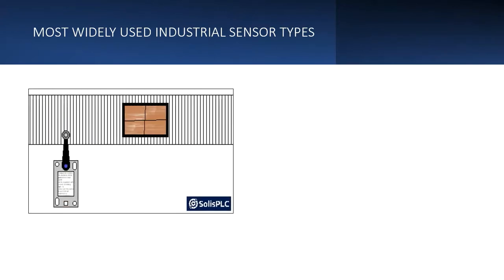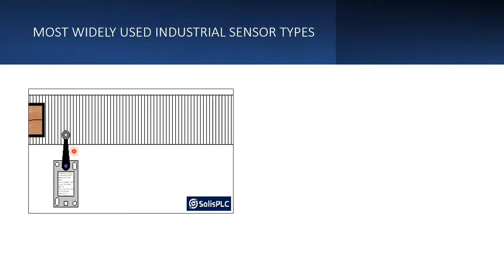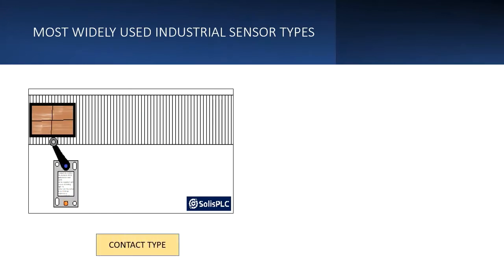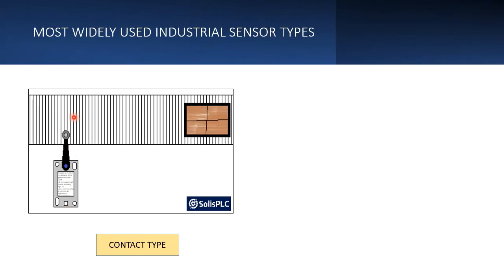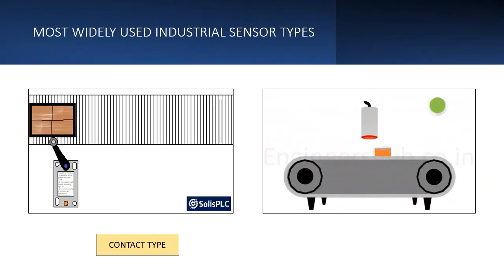Here you can see there is a conveyor and a palette is moving from one place to another. If you observe, the lever is getting pushed by the palette and we are getting a signal. This is one kind of sensor — it is a contact type sensor, because the sensor is actually in contact with the job.